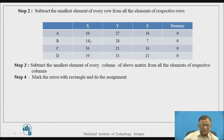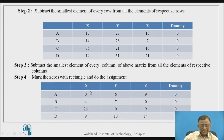Next, we identify the smallest element in each column and subtract it from all elements of the corresponding column. In the first column, the smallest element is 10. Subtracting 10 gives: 10 − 10 = 0, 14 − 10 = 4, 36 − 10 = 26, and 19 − 10 = 9. This operation is performed for every column, producing the reduced matrix at step 3.